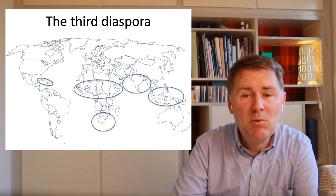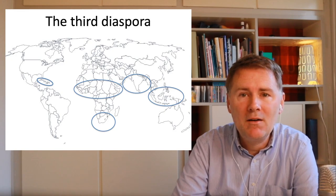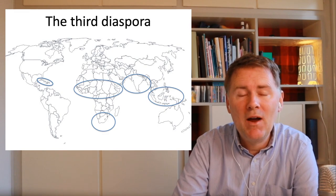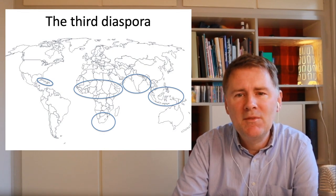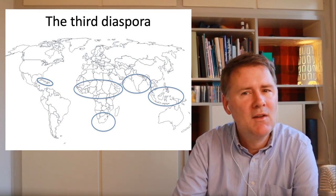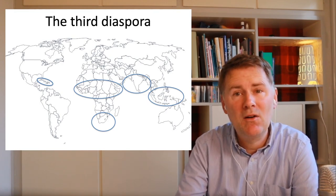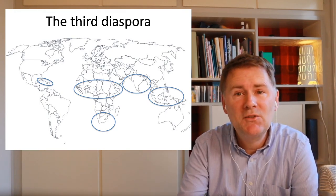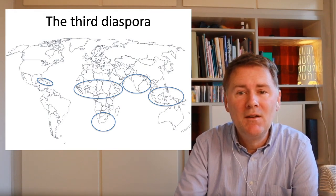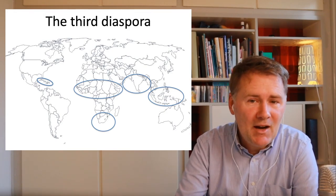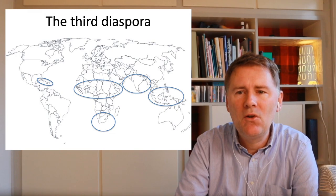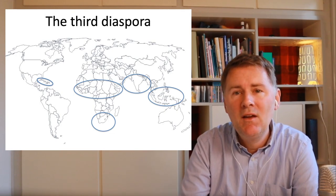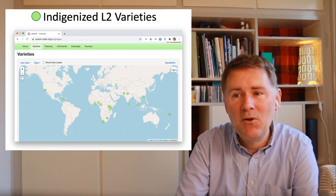The varieties we will focus on in this video are learner varieties — used by speakers who have a different L1 and who use English as a medium for communication in some situations of their daily lives. This is different from the scenarios in settlement colonies discussed in the videos on English in America and English down under. In the areas of the third diaspora we find quite a lot of so-called indigenized L2 varieties.